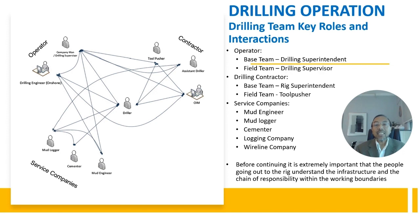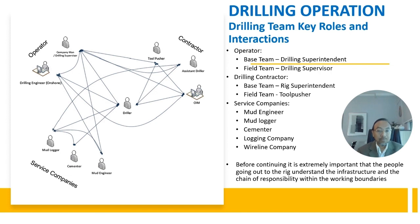For the drilling team key roles and interactions: on the operator side, the drilling superintendent is at the base and the drilling supervisor is responsible for the field team. For the drilling contractor, the base team is led by the rig superintendent and the field team by the tool pusher. Service companies involved include the mud engineer, mud logger, cementer, logging company and wireline company.